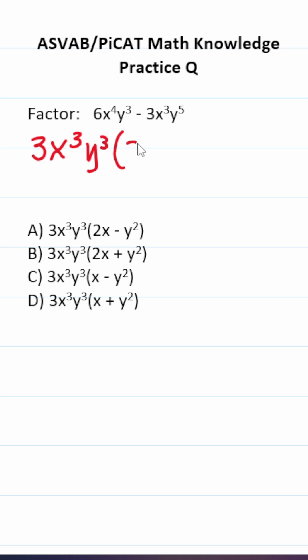All right, to make 3 into 6 we multiply by 2. To make x^3 into x^4 we have to put an x there. Since y^3 is already there we don't have to put anything. Of course this is going to be minus.